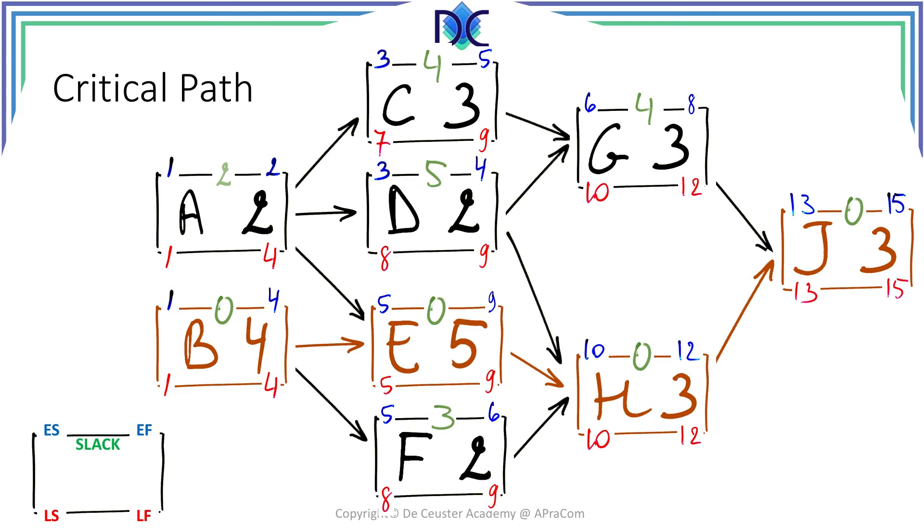So we found the critical path in this example by connecting all activities which have slack equal to 0. Be careful, this is not always the case. The critical path is given by activities with slack equal to 0 only when the early finish and late finish date of the project are the same. If that's not the case you cannot make this conclusion.